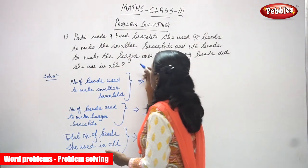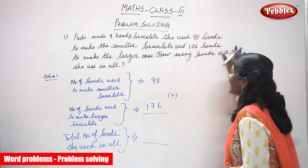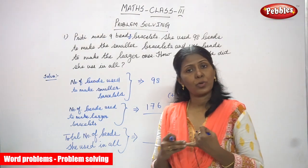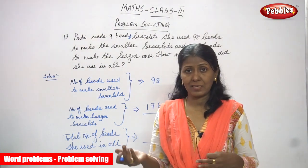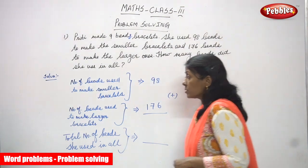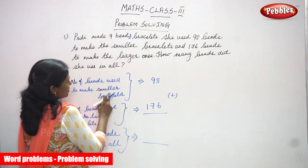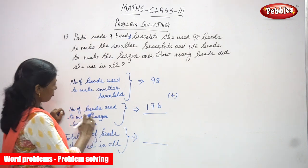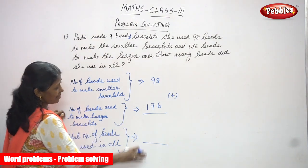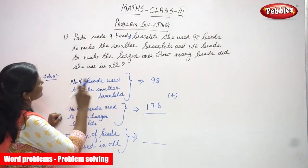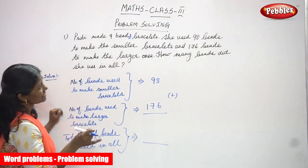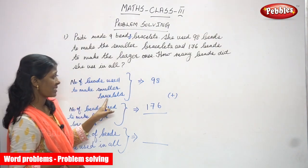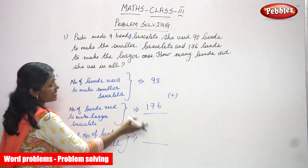She made 9 bead bracelets. She used 98 beads to make the smaller bracelet and she made two types of bracelets — one smaller and one larger. The number of beads used to make the smaller bracelet is 98, and the number of beads used to make the larger bracelet is 176.